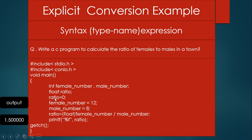I assign ratio as zero, then assign 12 to female_number and 8 to male_number. Then I write: ratio equals (float) female_number divided by male_number. Within the bracket I write float, meaning I am using explicit type conversion. If I am not using the float cast here, then female_number divided by male_number would perform integer division.